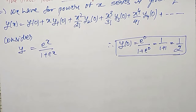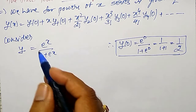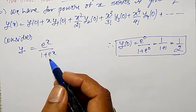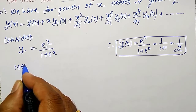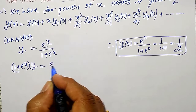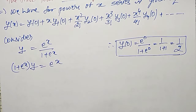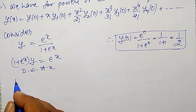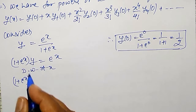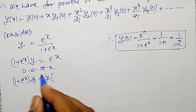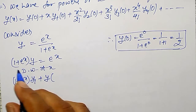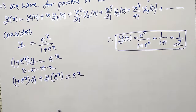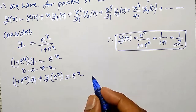Directly differentiating as a quotient would be lengthy. Instead, I shift to the other side: (1 + eˣ)·y = eˣ. Differentiating both sides with respect to x using the product rule: (1 + eˣ)·y₁ + y·eˣ = eˣ.